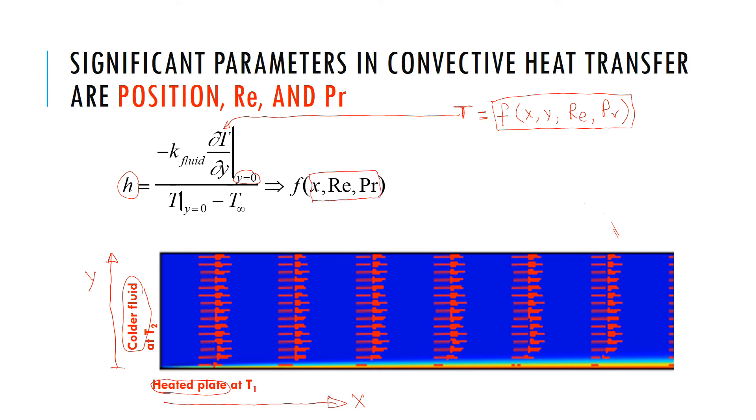In other words, the form is telling me whatever h is, it will be a function of position x along the plate and also Reynolds number and Prandtl number. Now, this did not give us the exact formula,